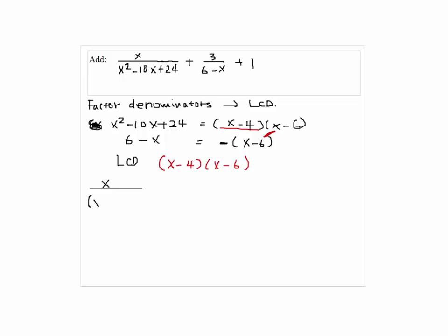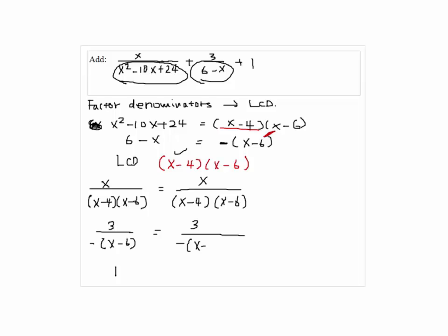So x over x minus 4 times x minus 6, which is the first fraction. And 3 over minus x minus 6, this is the second fraction, and then 1. Since the first fraction already has the LCD, the first fraction does not change the shape. The second fraction is missing x minus 4, so we're going to multiply top and bottom by the x minus 4.